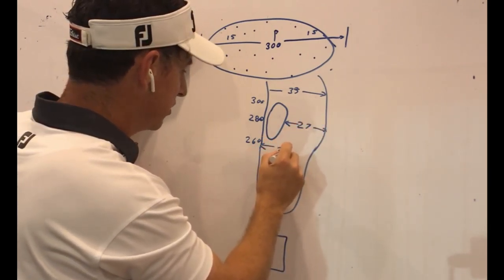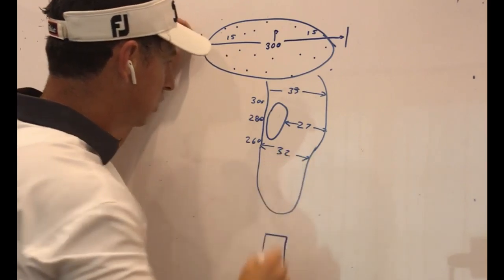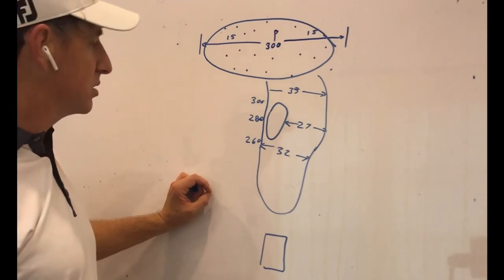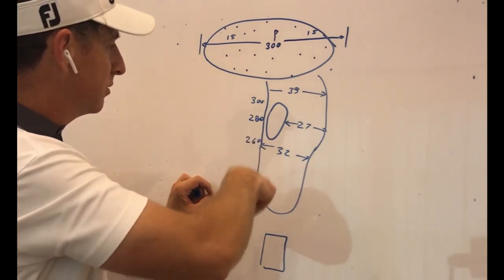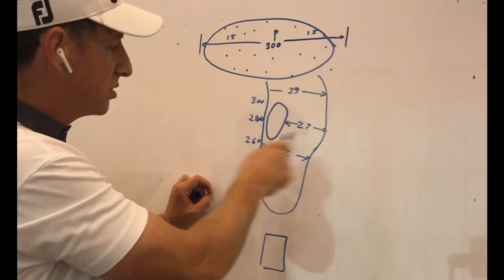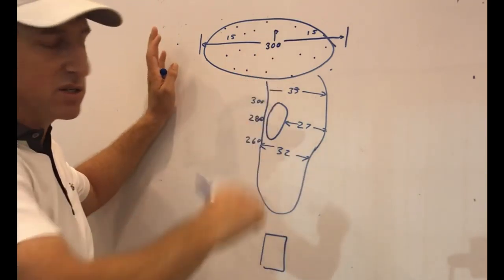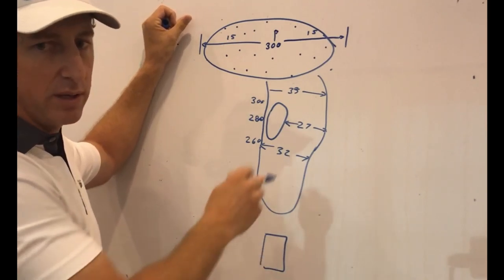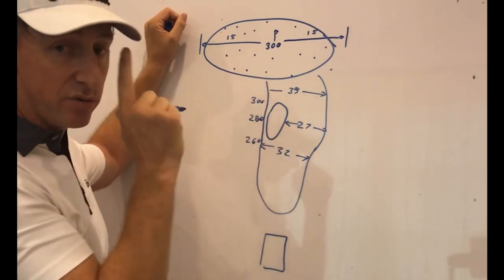Now what a lot of golfers don't look at when they're mapping courses is, obviously they know the carry, but they don't look so much at the width as much as the depth. So it's important when we're doing this that we know the width.